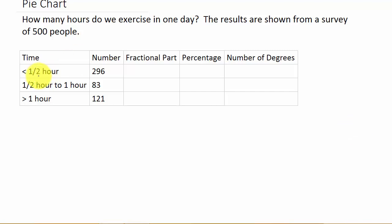So for less than half an hour in a day, 296 of the 500 people exercise. Between half an hour and an hour, 83 exercise. And more than an hour, 121 of the 500 people exercise.